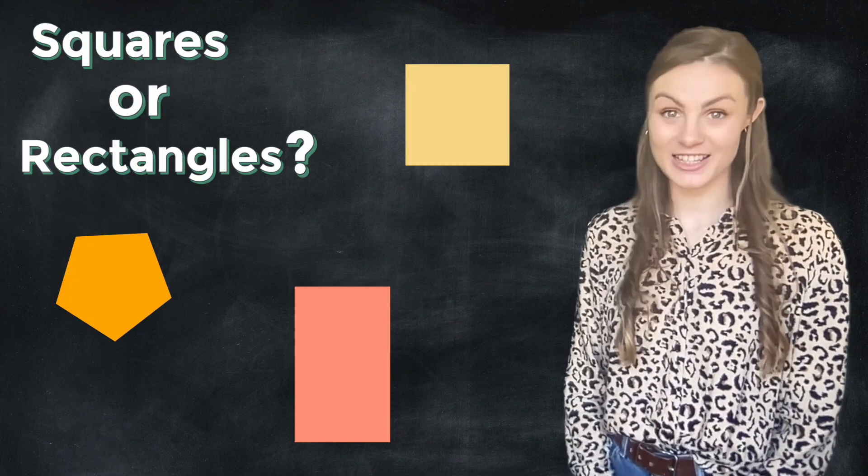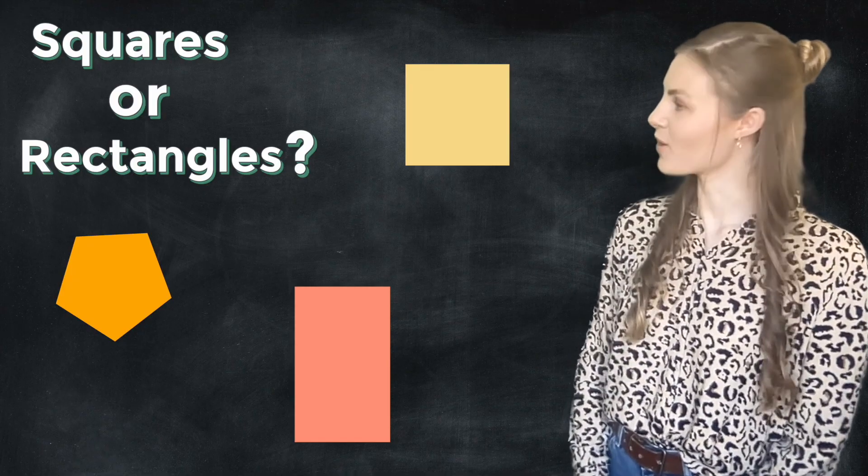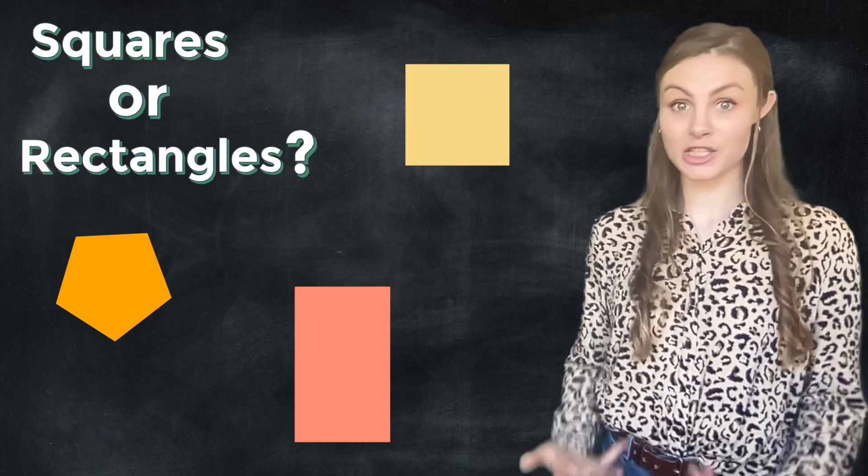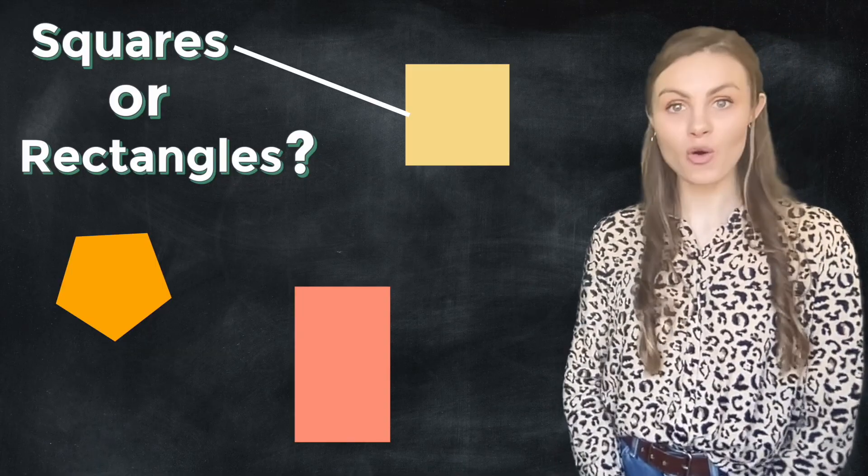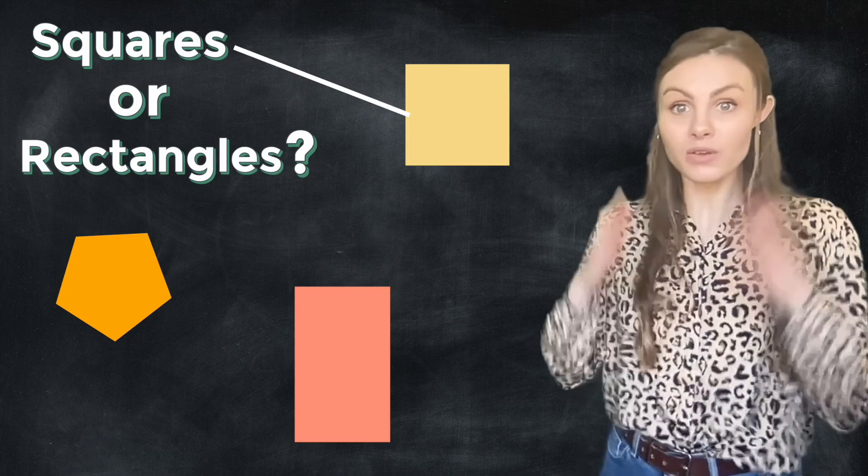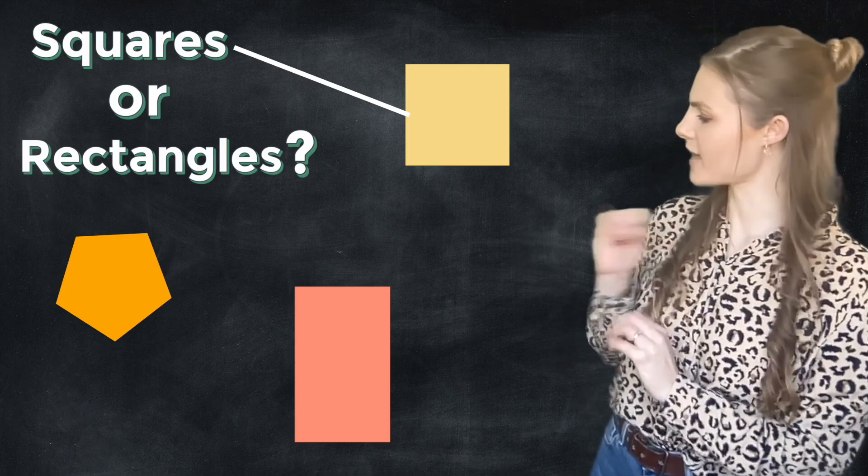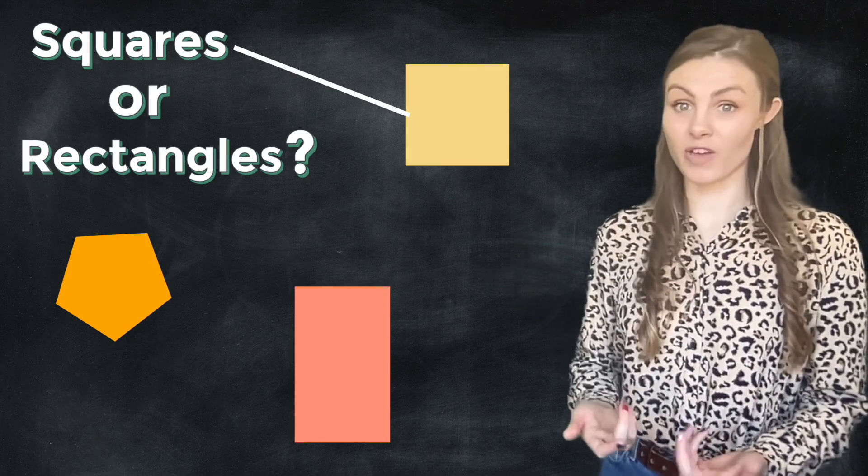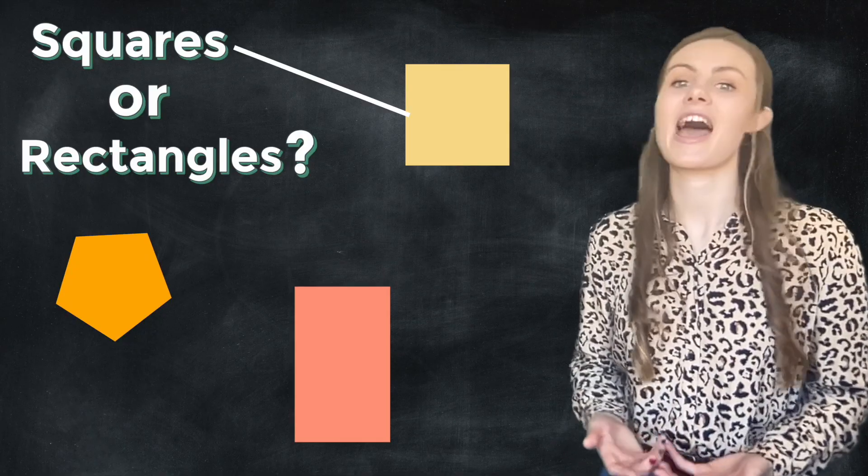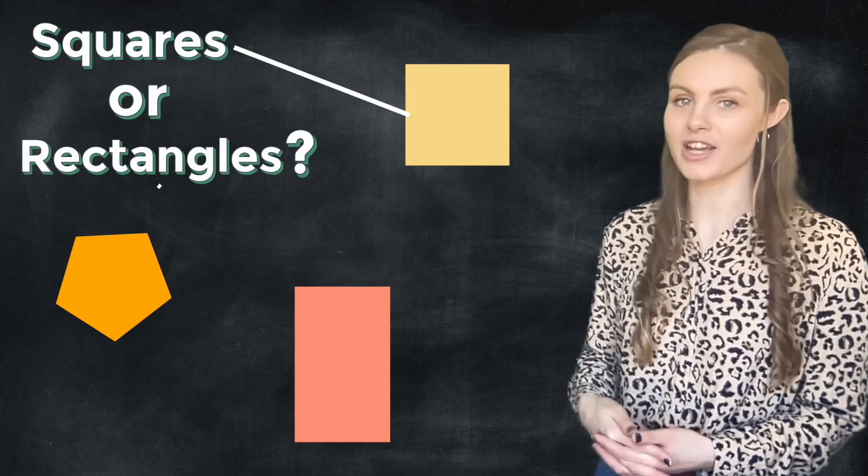Welcome back. Let's take a look at this together. So this one up here must be a square because it has four vertices, four sides, but it's also all of the sides of the same length. Whereas that one down there, it does have four vertices. It does have four sides. However, they're not the same length. So it must be a rectangle.